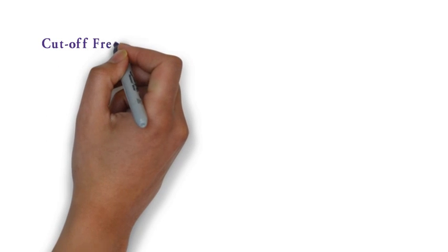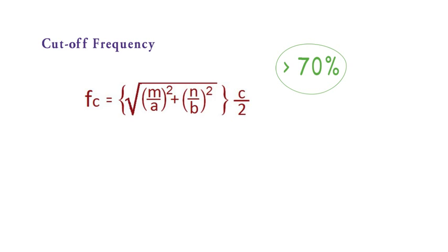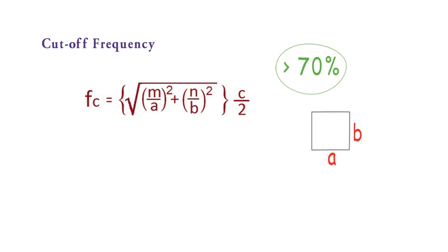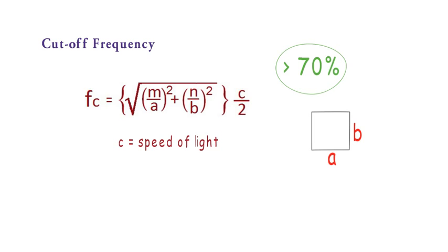Now the most important parameter in waveguide is its cutoff frequency. More than 70% questions in waveguide come from this topic only. The formula for cutoff frequency of a rectangular waveguide is fc equal to under root m by a whole square plus n by b whole square into c by 2. Here a and b is the horizontal and vertical dimension of the waveguide, c is the speed of light and we have just studied what m and n are. So better you remember this formula because whenever numerical come from waveguide this formula is used most of the times.